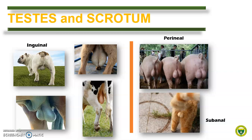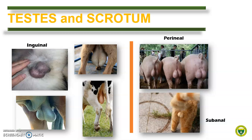We can also compare the orientation of the testis. In male dogs and in stallion, it is horizontally oriented, while in ruminants the testis are oriented vertically. Now let us describe them per animal, beginning with the dog. The scrotum is usually pigmented and covered with few hairs, as shown here.